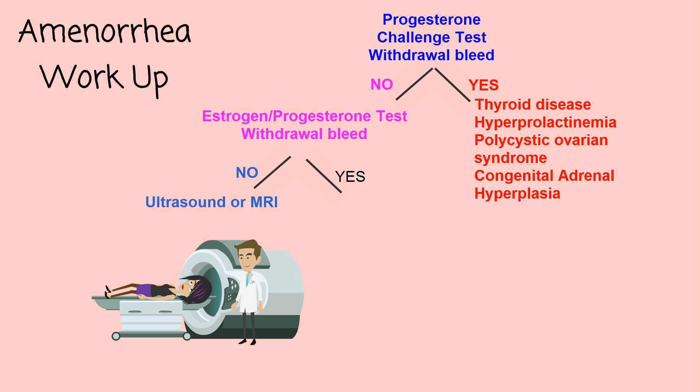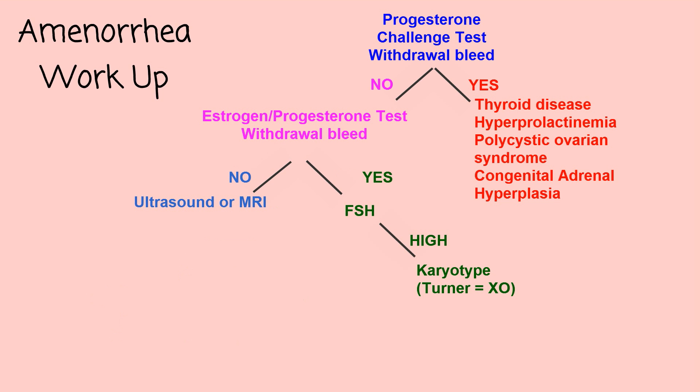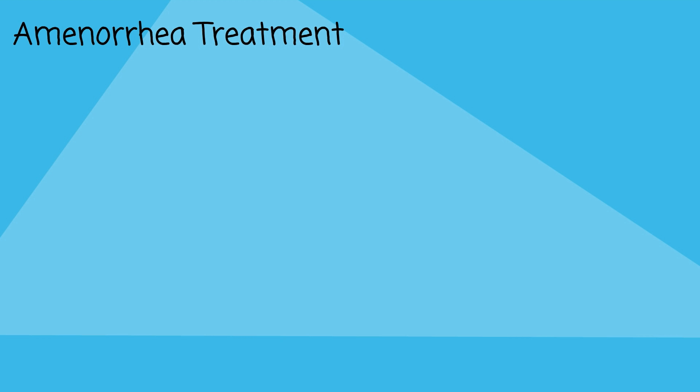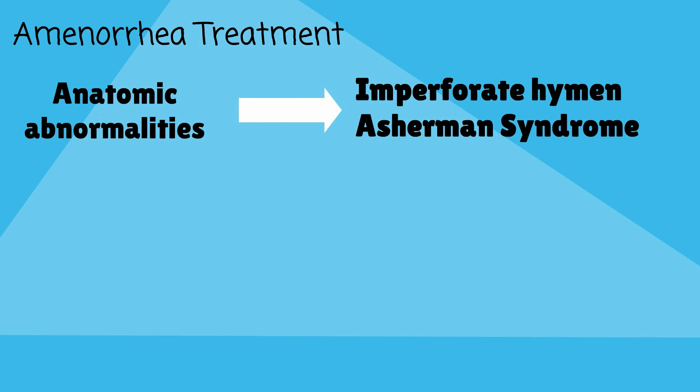If bleeding occurs after the combined test, FSH levels should be checked. A high serum FSH is indicative of primary ovarian insufficiency. A karyotype should then be performed to assess for complete or partial deletion of the X chromosome, as in Turner syndrome. Treatment of amenorrhea depends on the etiology.